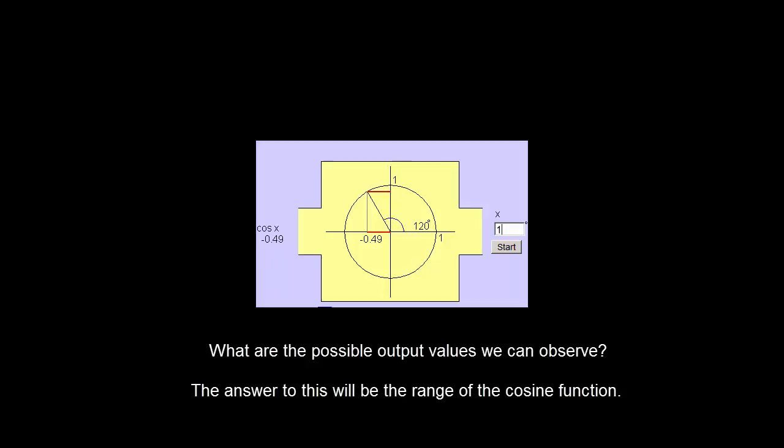And I can go all the way. The largest negative value I can have is at 180 degrees. And that'll give me negative 1. So you can see that my output can only be between negative 1 and positive 1, including all the numbers in between.